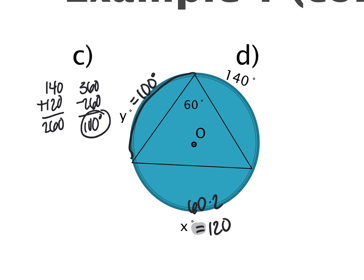An alternative method: you could convert the known arc of 140 to its inscribed angle of 70, then add 70 plus 60 equals 130, and multiply by 2 to get the arc. Same result.